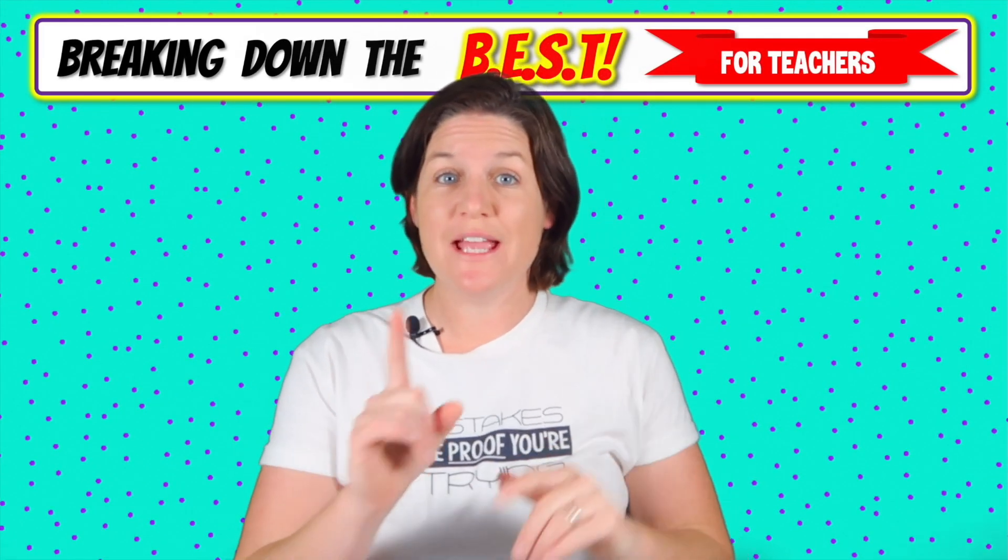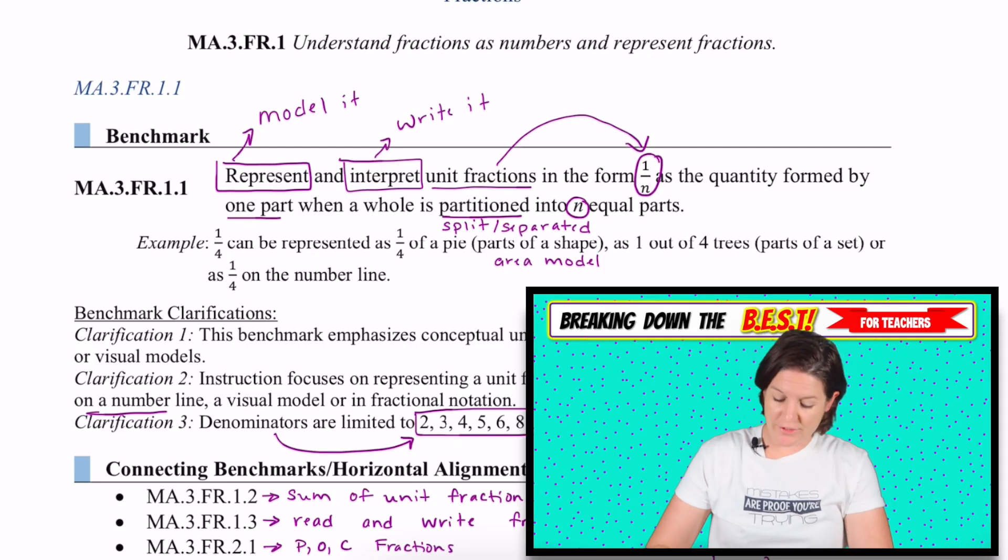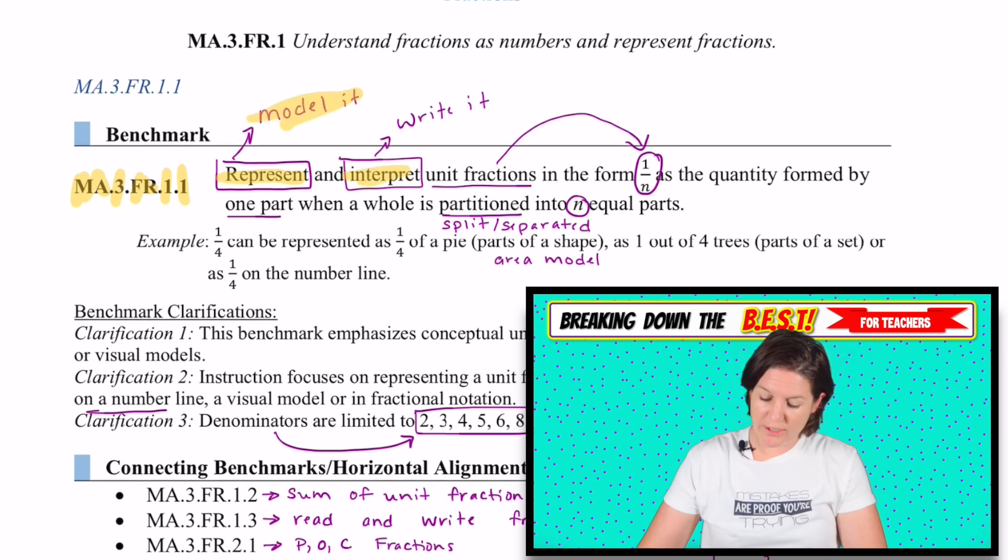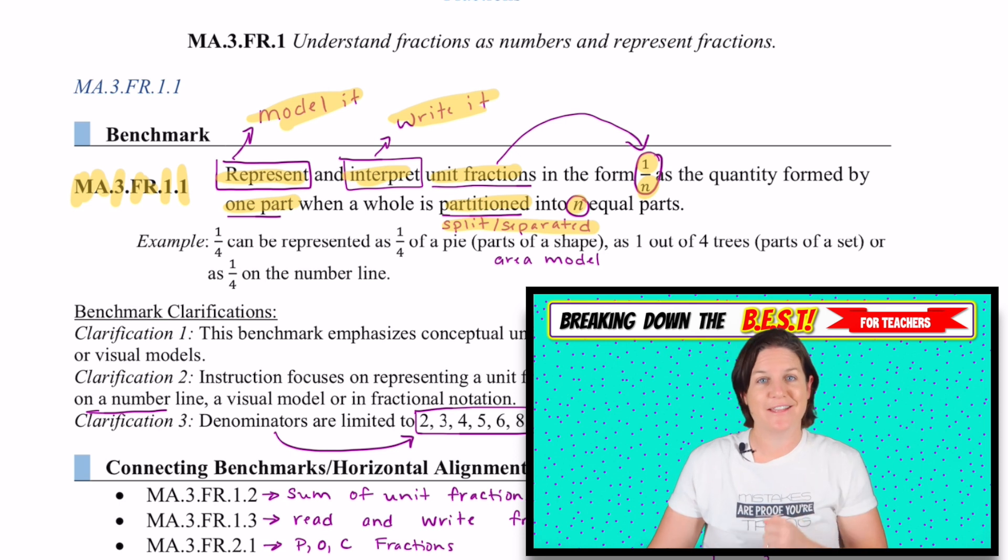Thank you for joining me as we break down the following standard. Today's standard is MA.3.FR.1.1, and it says to represent, which means we're going to model and interpret, which means we're going to write it and say it and be able to look at a fraction and be able to write it and say it. But we're focusing on unit fractions, which are written in the form of one being in the numerator. Really, anything can be in the denominator, although there will be some limits. We're going to represent these unit fractions as the quantity formed as one part when a whole is partitioned, which means split or separated into n equal parts, n again being the denominator.